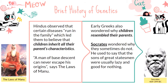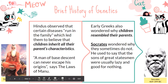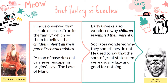Aside from selective breeding, here are some of the initial ideas our ancestors had about genetics. Hindus observed that certain diseases tend to run in families, and some believed children inherit all characteristics from their parents. The Laws of Manu stated that a man of base descent can never escape his origins — reflecting the caste system in India. Early Greeks also wondered why children resemble their parents, and Socrates wondered why they sometimes do not, noting that sons of great statesmen were usually, in his words, good for nothing.